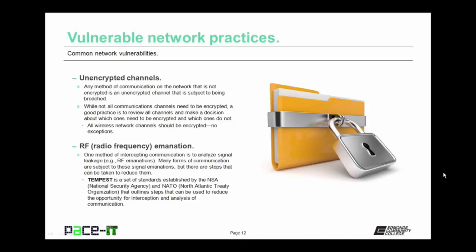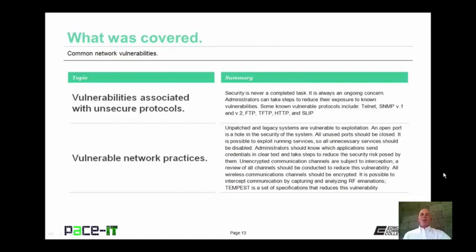A vulnerability that few network administrators think about are RF or radio frequency emanations. One method of intercepting communication is to analyze signal leakage. Many forms of communication are subject to these signal emanations, but there are steps that can be taken to reduce them. Tempest is a set of standards established by the NSA and NATO that outlines steps that can be used to reduce the opportunity for the interception and analysis of communication. That concludes this session on common network vulnerabilities. On behalf of PACE IT, thank you for watching this session.